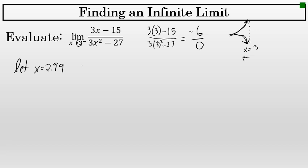If I let x equal 2.99 and evaluate in the original expression — 3 times 2.99 minus 15, over 3 times 2.99 squared minus 27 — what I find is that at that value of x, the function is at 33.55. And this implies that the graph is probably going up as it gets closer to x equals 3.